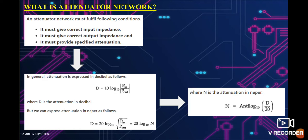What is an attenuator circuit? An attenuator network must fulfill the following conditions: it must give correct input impedance, it must give correct output impedance, and lastly, it must also provide specified attenuation.